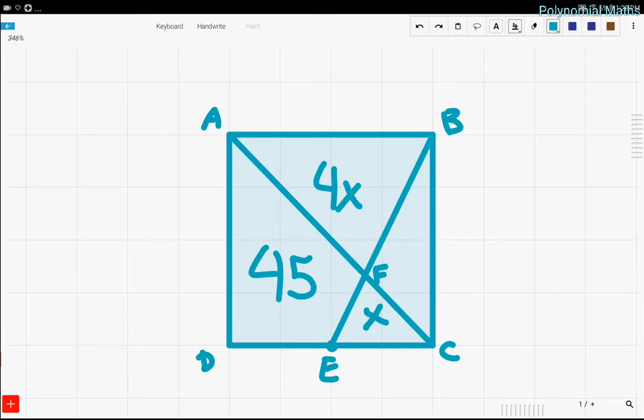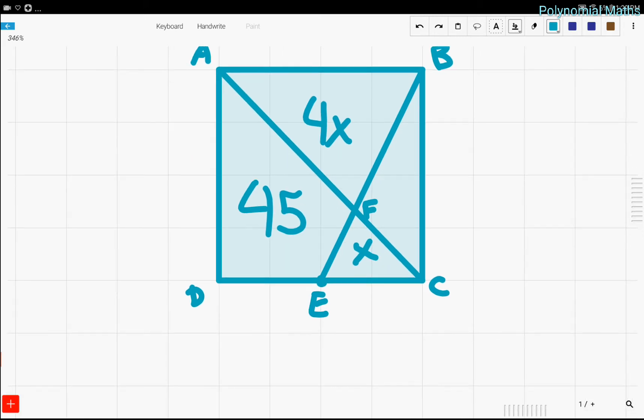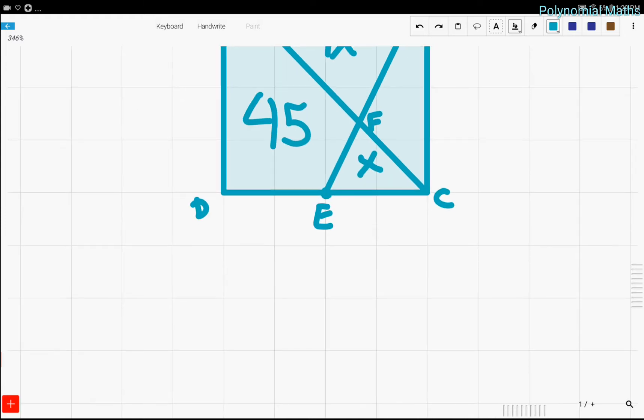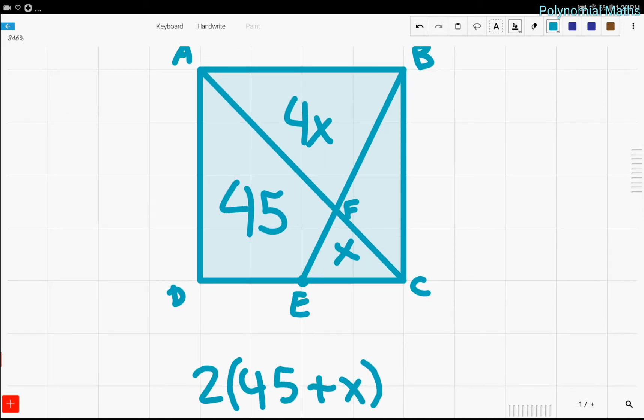Now back to our problem, let's now make some equations. So we realize that 45 plus X is equal to half the area of the whole square. Because 45 plus X is equal to the area of half the square. So that means 2 times 45 plus X must be equal to the area of the square.